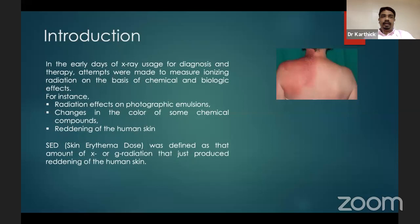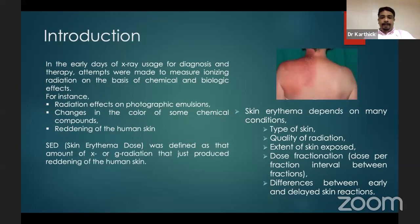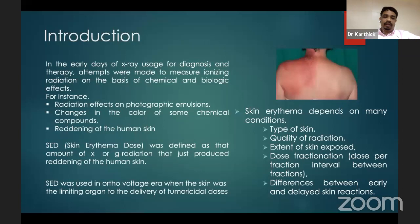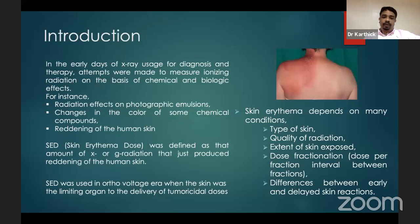The skin erythema dose was defined as the amount of X-ray or radiation that just produces reddening of the human skin. It can be in several gray, and it depends upon the kind of radiation used. The problem is skin erythema depends on many conditions, especially the type of skin. Some patients will have a higher skin erythema at four or five gray, whereas some patients may not until ten gray, or as low as two gray. So it is not a confident measurement tool to measure the dose. It also varies with the quality of radiation — whether you are using 100 kV X-ray or up to 500 kV orthovoltage X-ray.